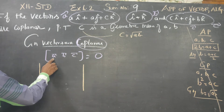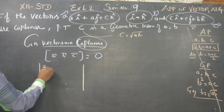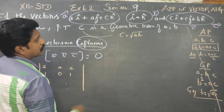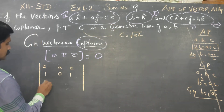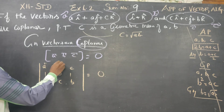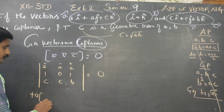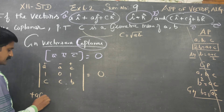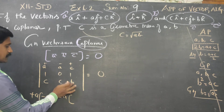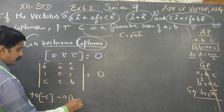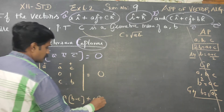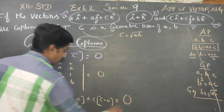Using this condition, I am going to start my sum. What is my A? A, C. What is my B? 1, 0, 1. What is my C vector? C, C, B equal to 0. Let us expand this — plus, minus, plus. Plus A into (0 times B is 0, minus C), minus A into (B minus C), plus C into (C minus 0), equal to 0.